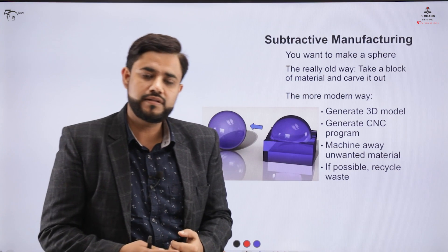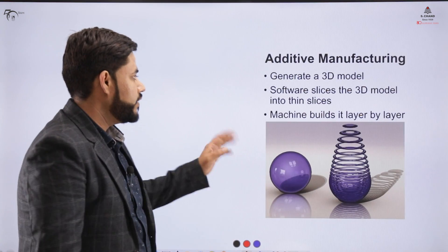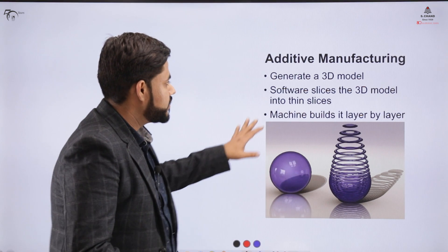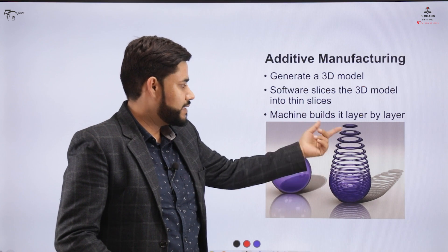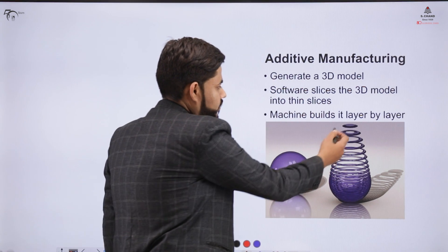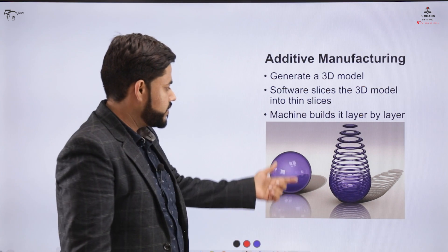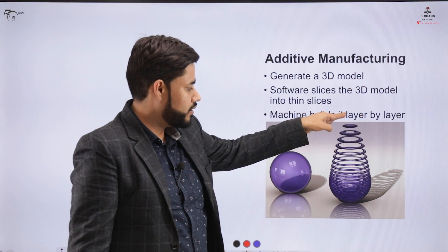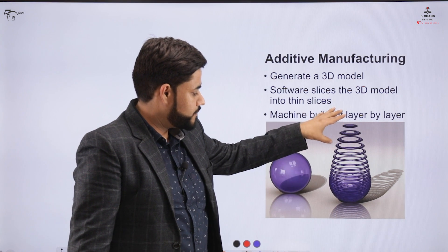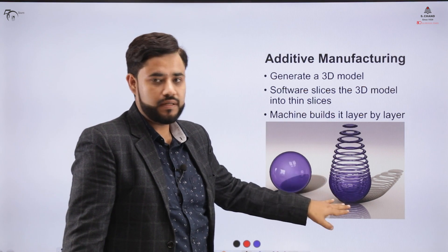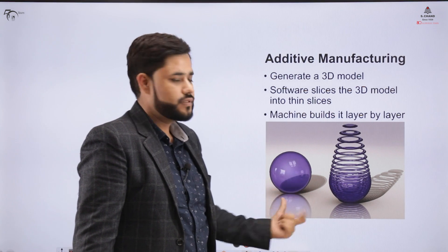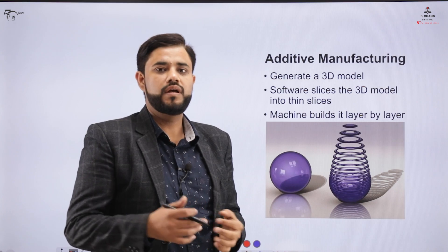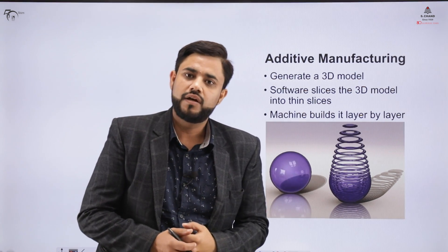Now let us come to the topic of additive manufacturing. In additive manufacturing, the similar 3D model is sliced into thin slices by the help of software. The machine builds this with the help of layers — these layers get added up to form a new solid object. So in additive manufacturing, we go layer by layer and put layers together so that the solid object is formed.